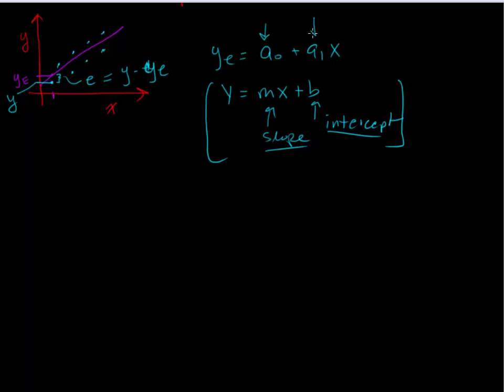And so this is the same form as this equation here. Where this is our intercept. This is our slope. And so really we can express this error in terms of y minus ye. Or we can alternatively write this as y minus a naught minus a one times x.